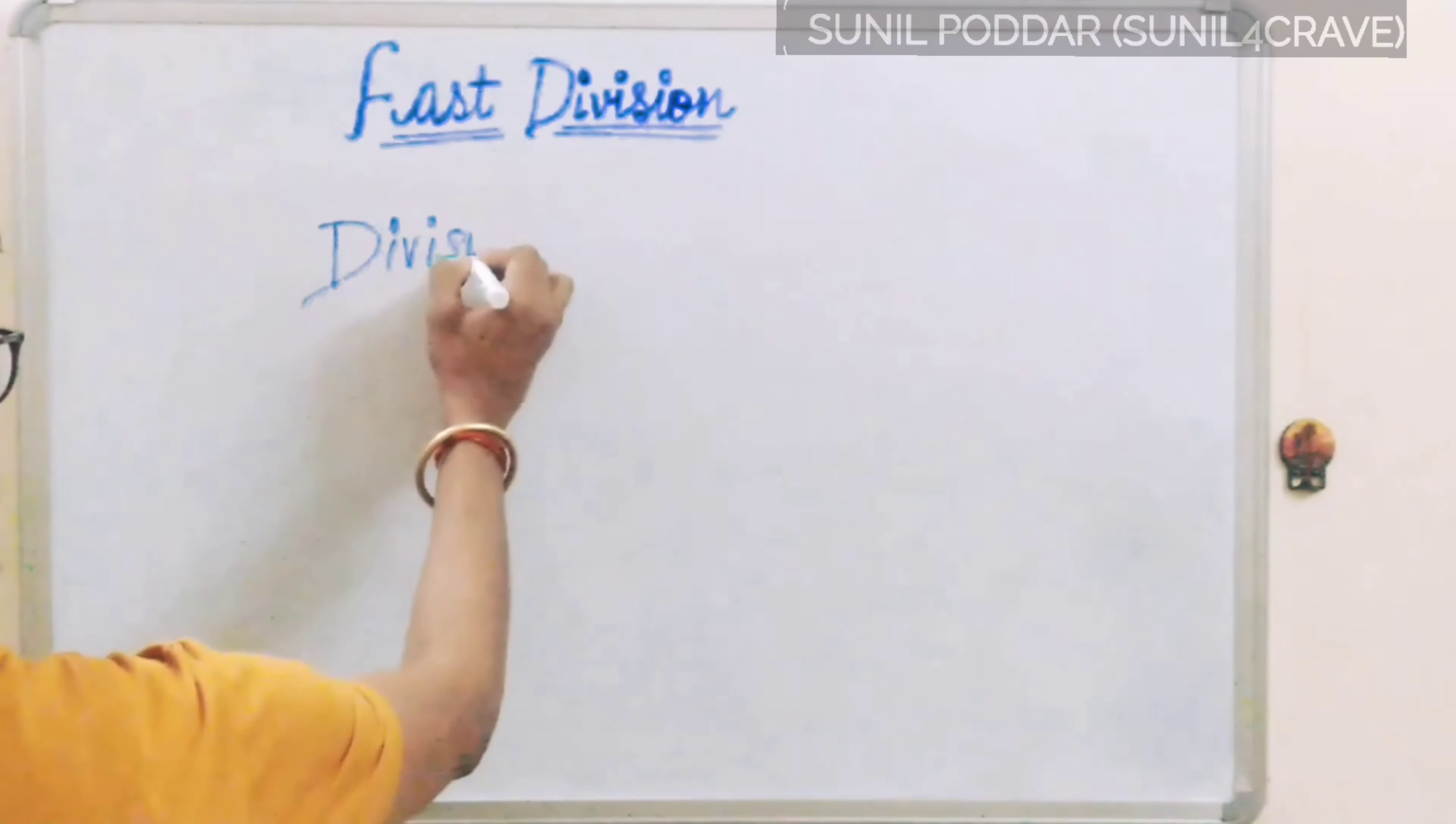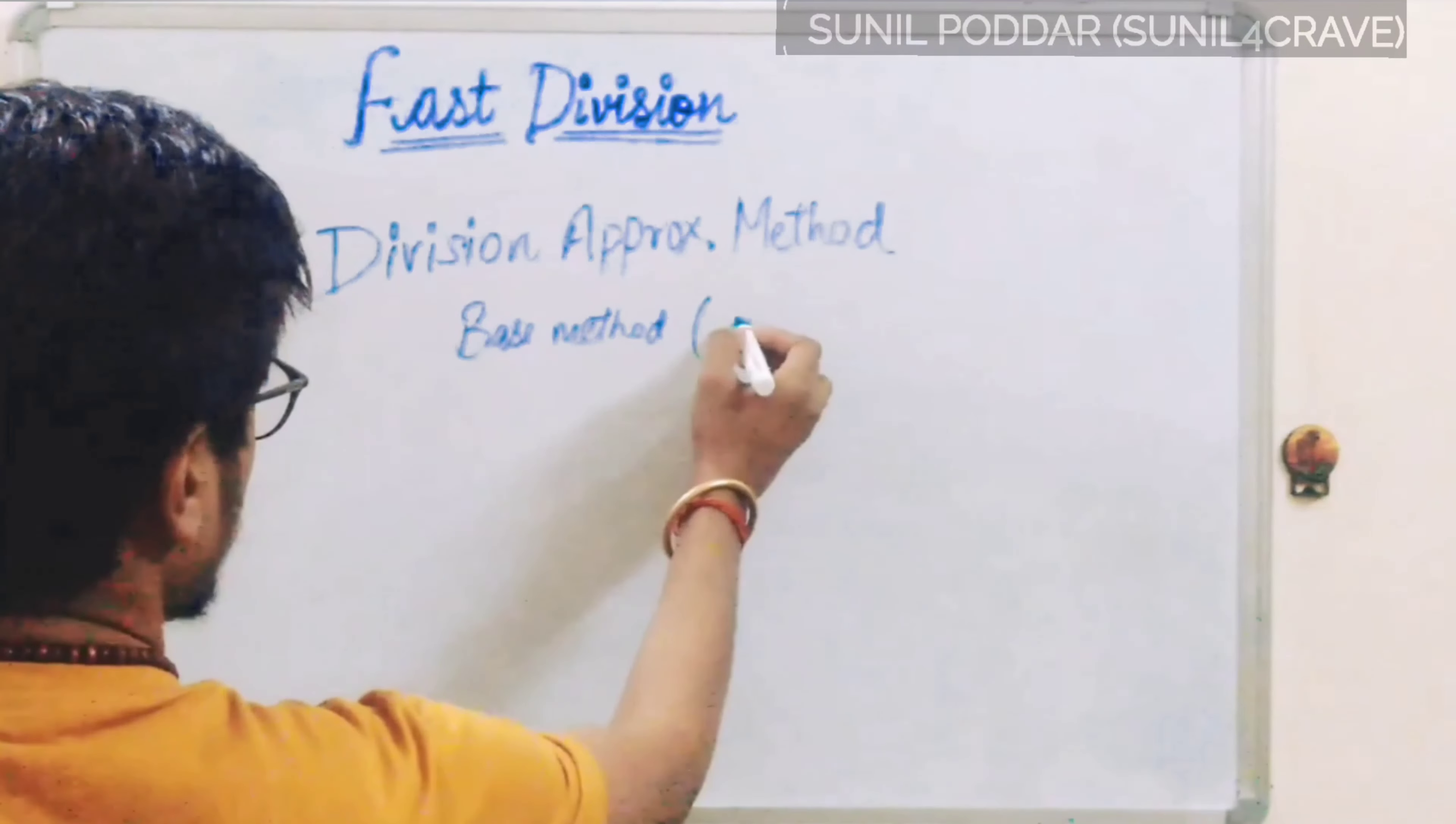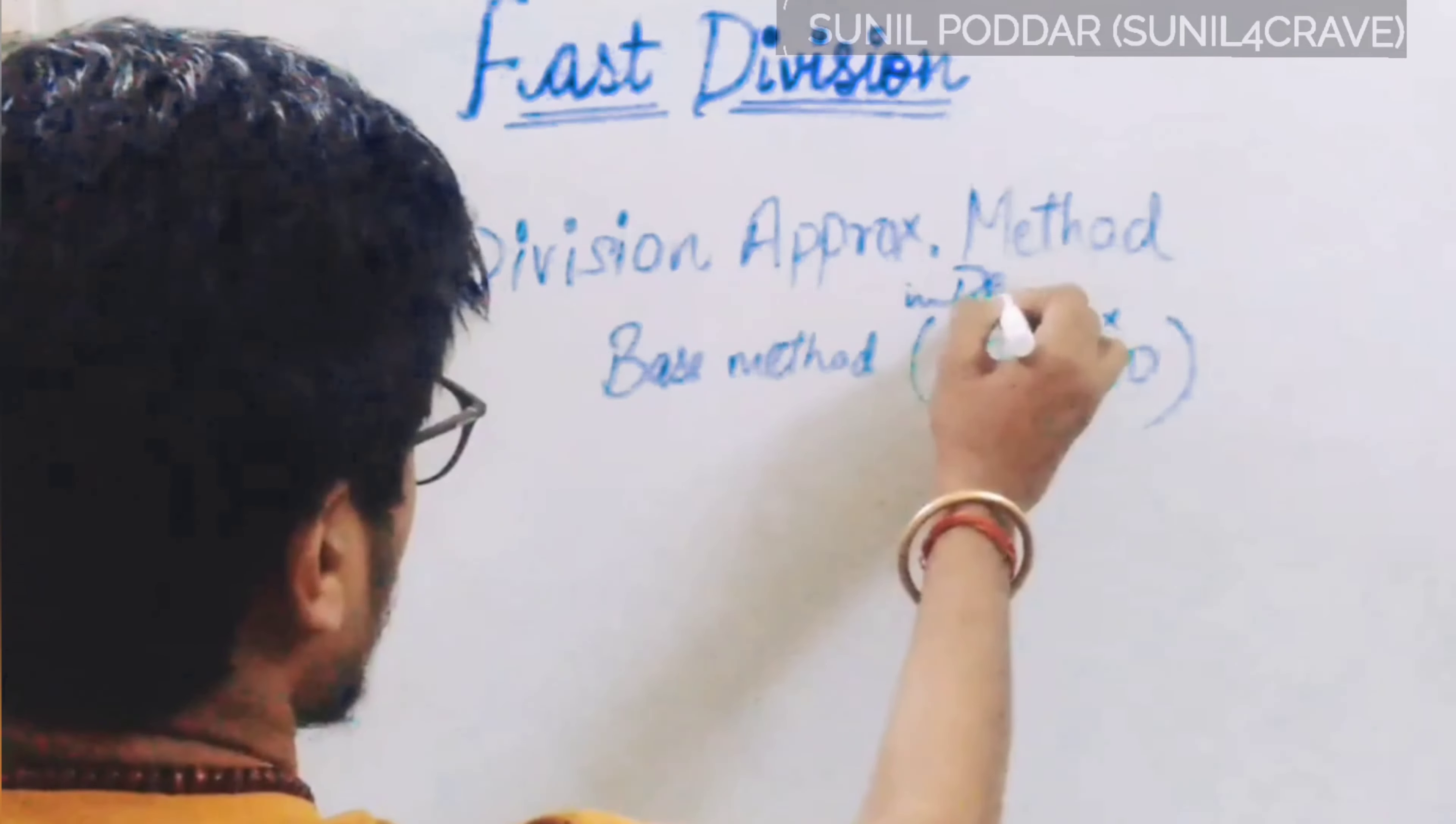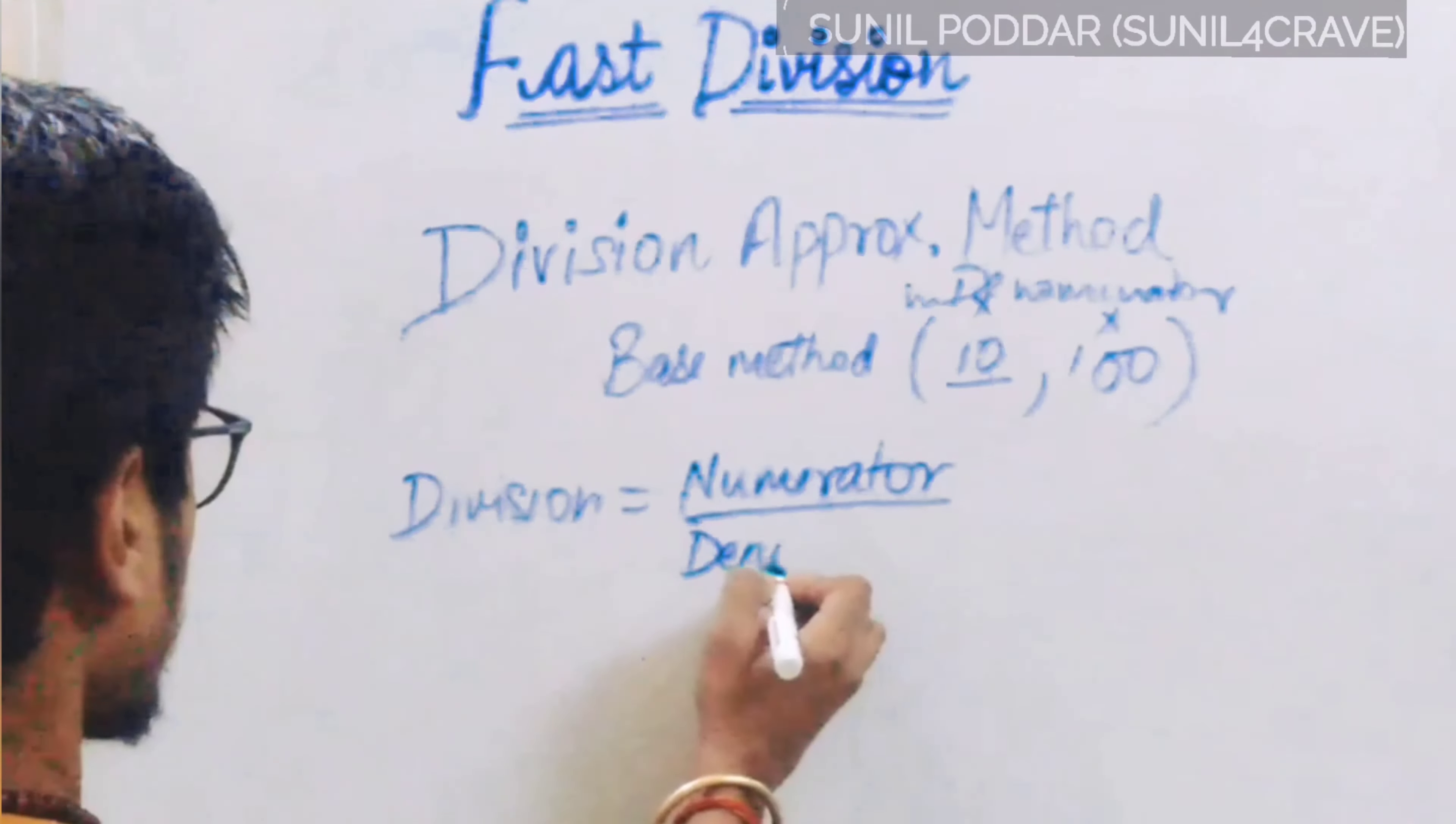Here I am going to tell you about division approximate method. We use base method, means it will be divisible over 10. It is a multiplication of 10 or 100 in denominator. In division, the upper one is always known as numerator. The below one is known as denominator.